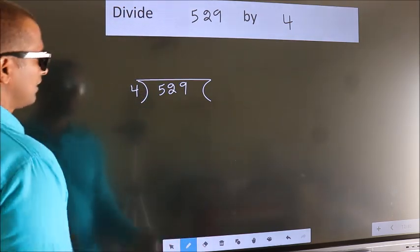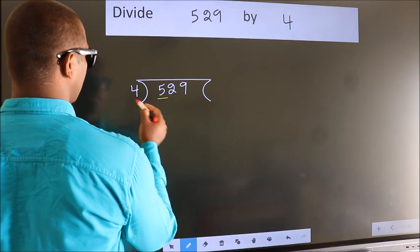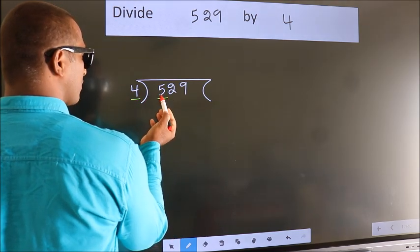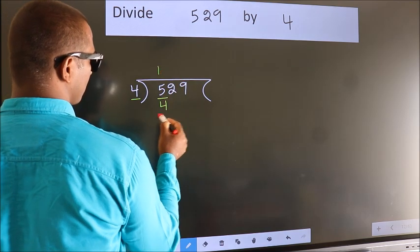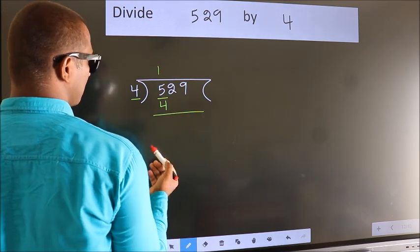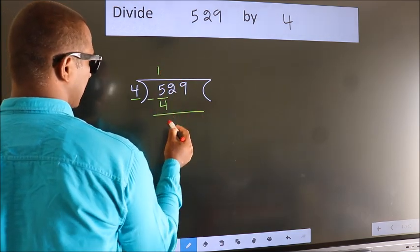Next, here we have 5, here 4. A number close to 5 in 4 table is 4 ones, 4. Now we should subtract. We get 1.